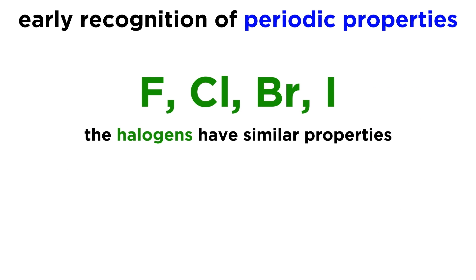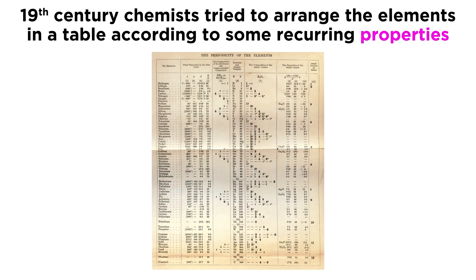Fluorine, chlorine, bromine, and iodine were shown to have similar properties. A number of chemists used all of this data to arrange the elements in a particular way, according to periodic relationships, or characteristics that are recurring every certain number of elements.